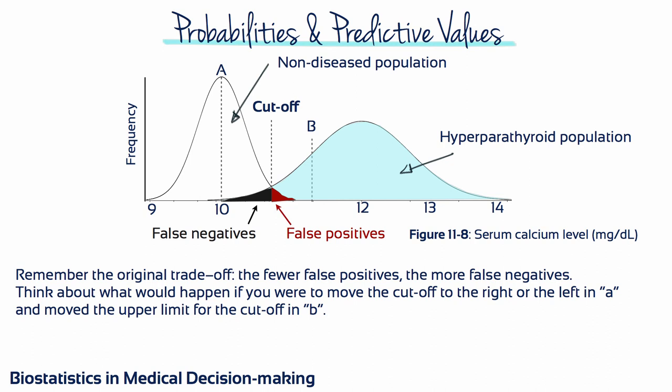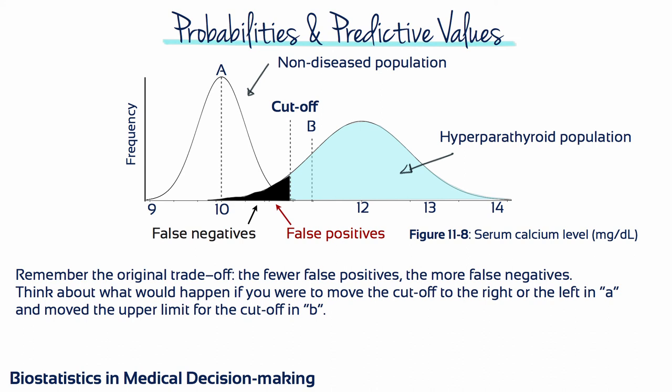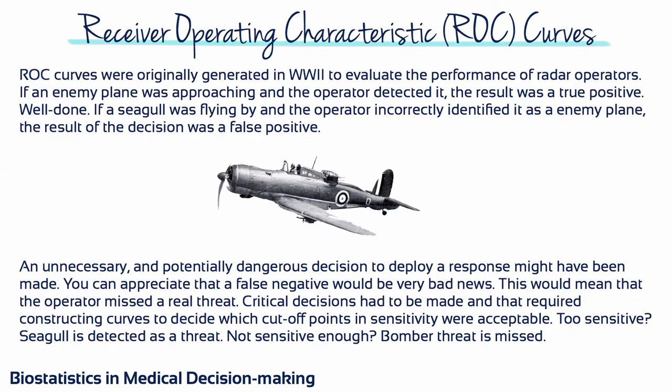Remember that even in a healthy population, 2.5% of people will have values above and 2.5% below the reference range. Think about what happens if you move the cutoff to the right or left. Moving the cutoff towards the healthy population will catch more people who actually have the disease — important if the disease is particularly dangerous — but the number of false positives will go up, and more people might be made unnecessarily anxious and have to undergo another test. Moving the cutoff towards the disease population increases false negatives, and we would miss people who really have the disease. Receiver operating characteristic, or ROC, curves can be used to decide what an appropriate cutoff for a particular test should be.